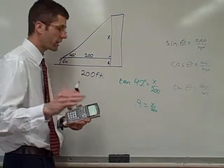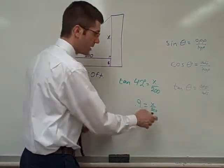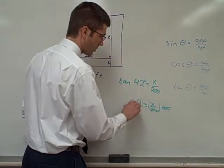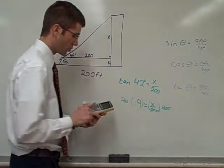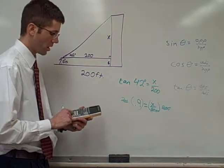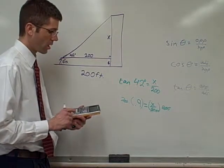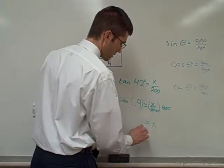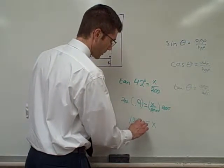At this point, we need to get X by itself. So we're going to multiply by 200. So we will multiply by 200. Cancels those out. Multiply by 200. So .9 times 200 is 180. 180 feet.